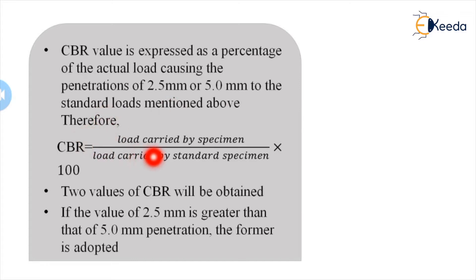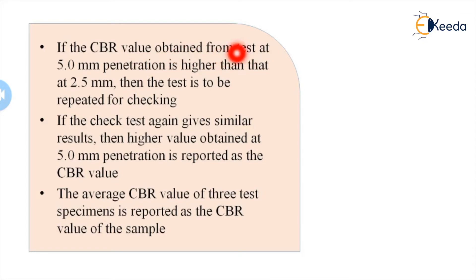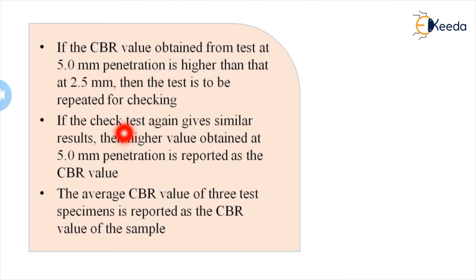CBR is expressed as a percentage: load carried by the specimen divided by the load carried by standard crushed stone aggregate, multiplied by 100. Two CBR values are obtained — at 2.5 mm and 5 mm penetration. If the 2.5 mm value is greater, it is adopted. If the 5 mm value is higher, the test is repeated; if again higher, the 5 mm penetration value is reported as the CBR value.